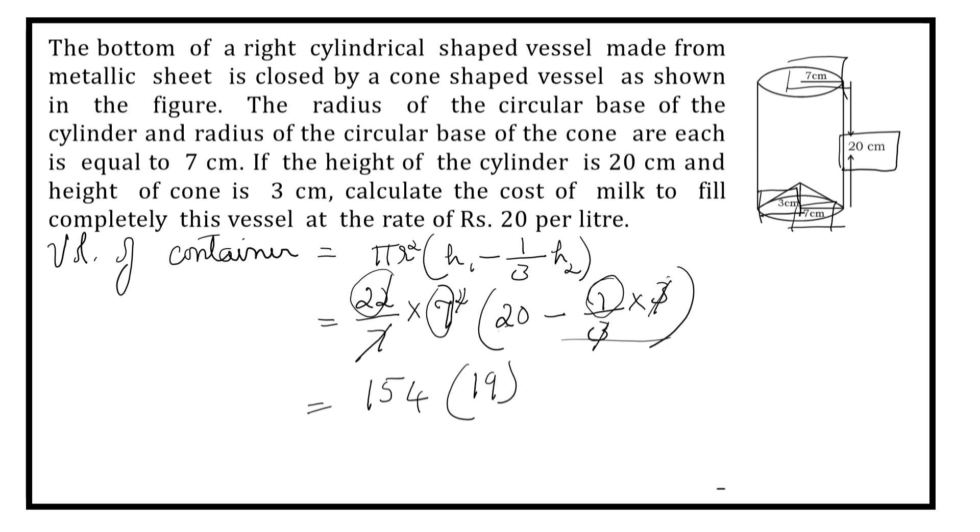Now we have to multiply these two. Easy sums. 19 times 4 are 76. Carry 7. 19 times 5 are 95 plus 7, 102. Carry 10. 19 times 1 are 19 plus 10, 29. 2926 centimetre cube.